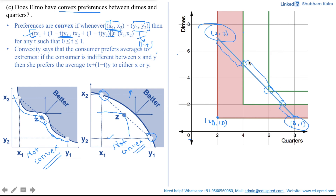But here, for some segments of the line the consumer was getting a higher level of satisfaction and in other segments at least the same level of satisfaction. Thus, we conclude that the preferences are convex for Elmo.